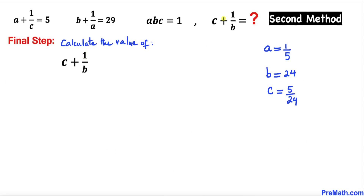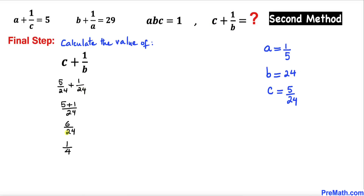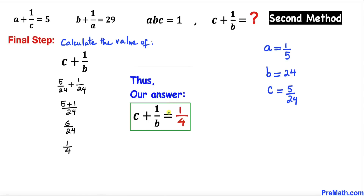Finally, let's calculate c plus 1 over b by plugging in c equals 5 over 24 and b equals 24. That gives us 5 over 24 plus 1 over 24, which simplifies to 6 over 24, or 1 over 4. Thus our value for c plus 1 over b turns out to be 1 over 4.